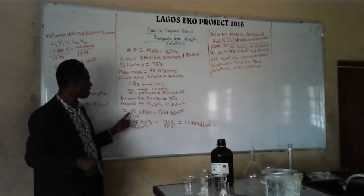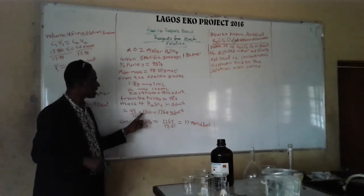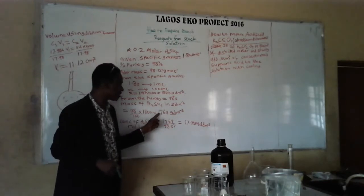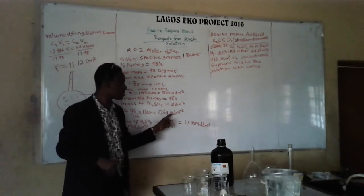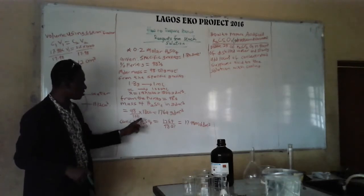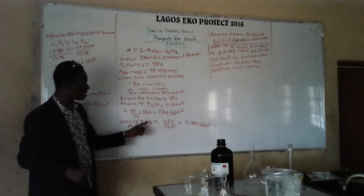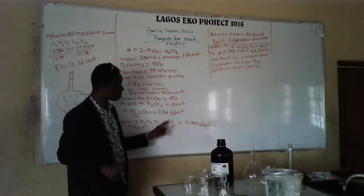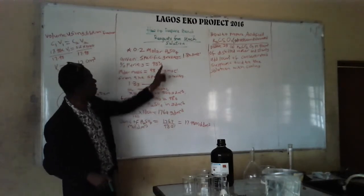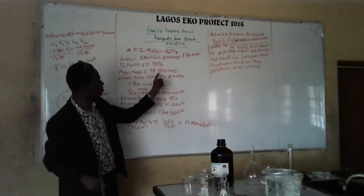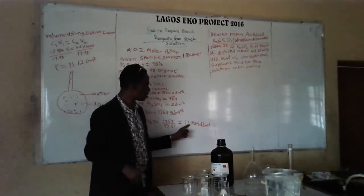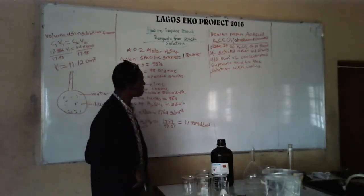So we calculate 98/100 times 1800 g per litre, which gives us the concentration of H₂SO₄ in the solution. Dividing by the molar mass of H₂SO₄, which is 98.07 g/mol, we get a molarity of approximately 17.98 mol per litre.